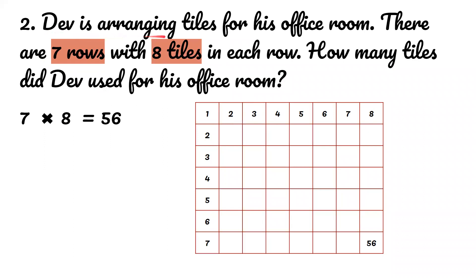Dave is arranging tiles for his office room. There are seven rows with eight tiles in each row. How many tiles did Dave use for his office room?